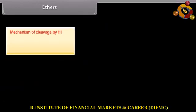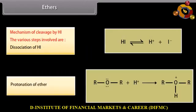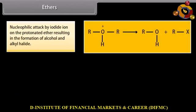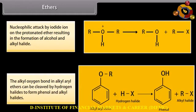Mechanism of cleavage by HI: the steps involved are dissociation of HI, protonation of the ether, and nucleophilic attack by iodide ion on the protonated ether, resulting in the formation of alcohol and alkyl halide. The alkyl-oxygen bond in alkyl aryl ethers can be cleaved by hydrogen halides to form phenol and alkyl halides.